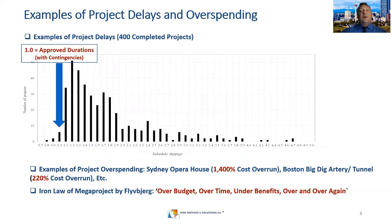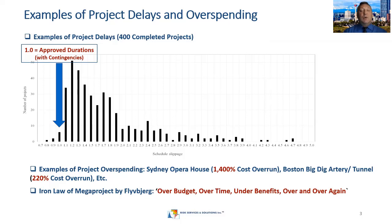Let's start with some examples of project delays and overspending. From my book, this is about 400 completed projects and most of them were actually delayed. The distribution is quite skewed — parameter one corresponds to approved durations when a project met targets, but most were delayed by 100 or even 200 percent. There are also many examples of overspending: Sydney Opera House with 1,400 percent cost overrun and the Boston Big Dig Tunnel, characterized by 220 percent cost overrun.